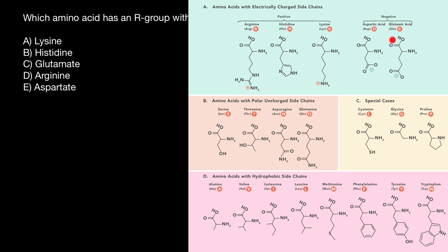Aspartic acid and glutamic acid have R chains with a negative charge. But arginine, histidine, and lysine are in the group with positive charge. What is interesting is that while arginine and lysine have a positive charge, histidine is shown here without a charge.